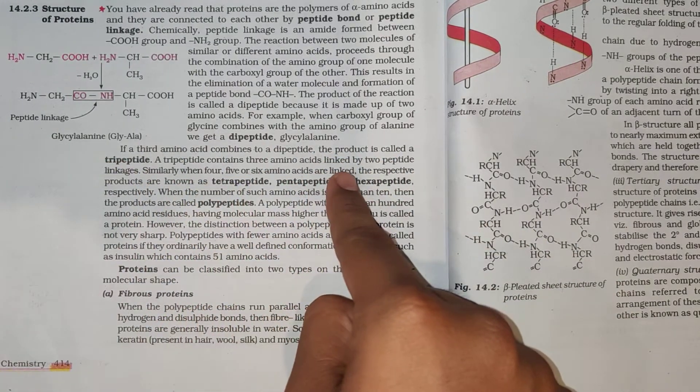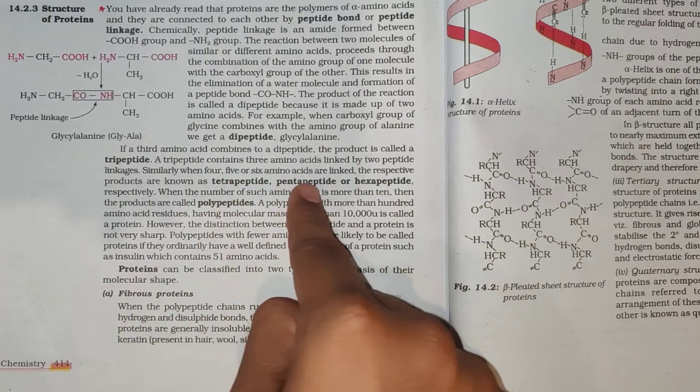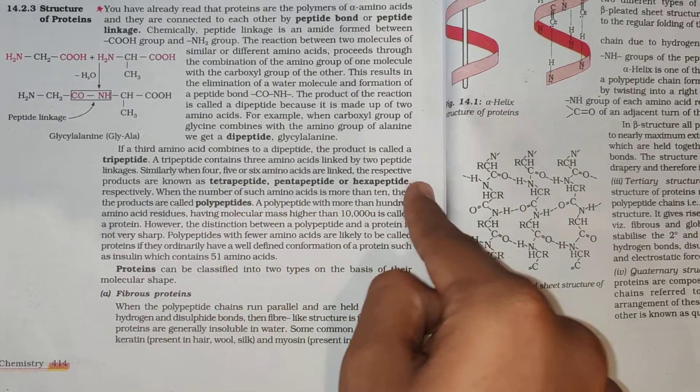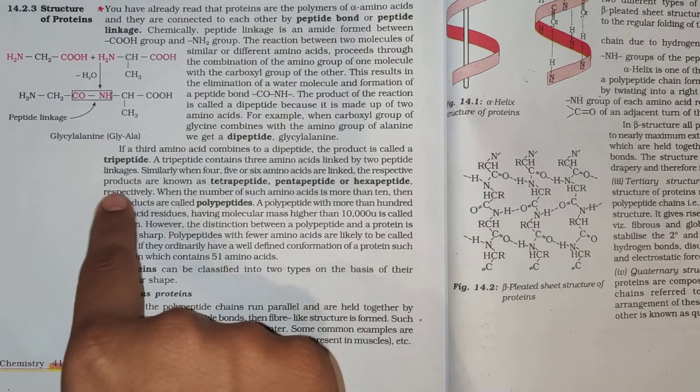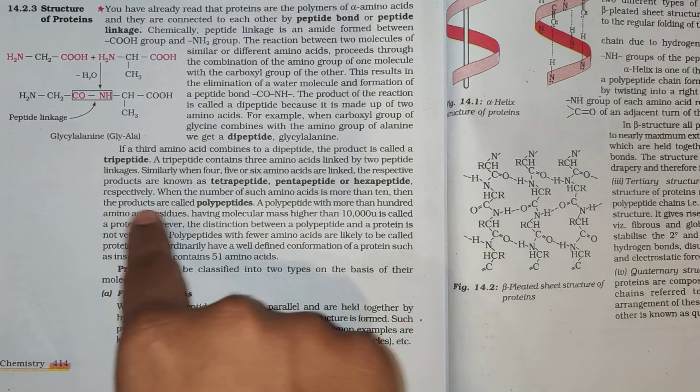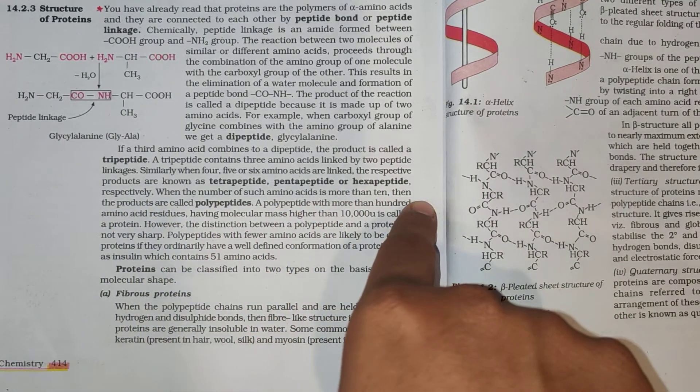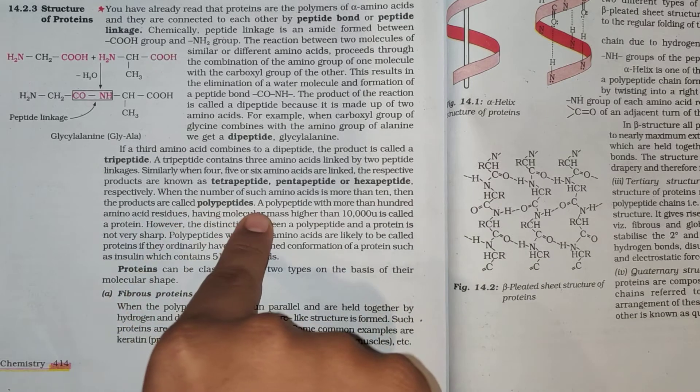A tripeptide contains three amino acids linked by two peptide linkages. Similarly, when four, five or six amino acids are linked, the respective products are known as tetrapeptide, pentapeptide or hexapeptide respectively. When the number of such amino acids is more than 10, then the products are called polypeptides.